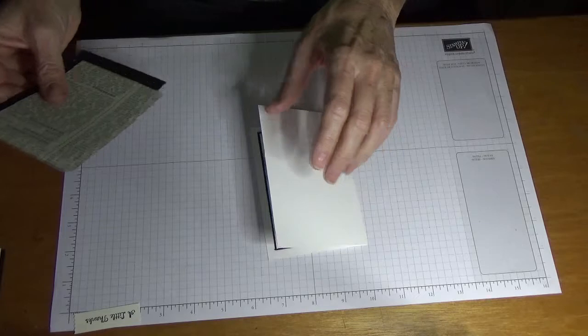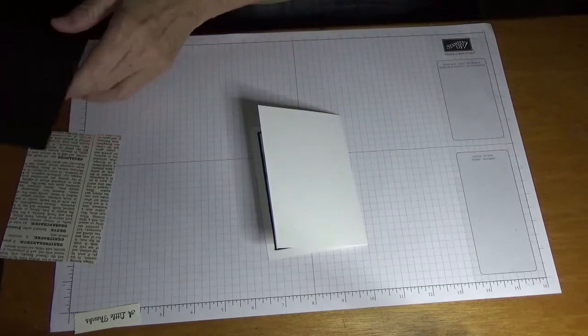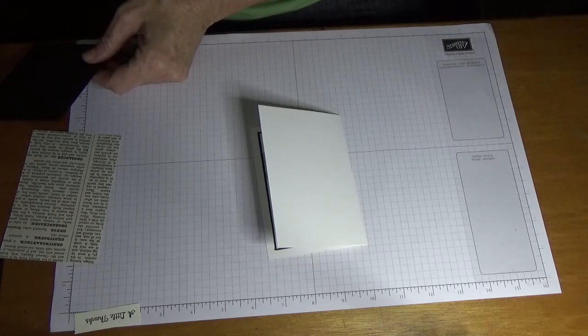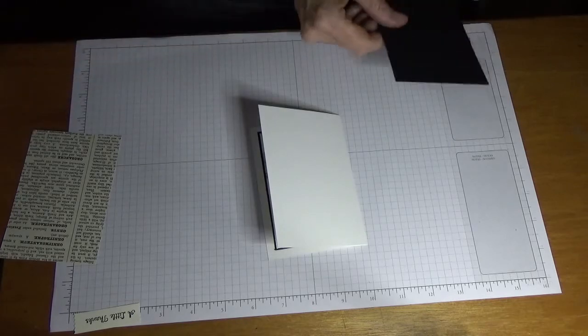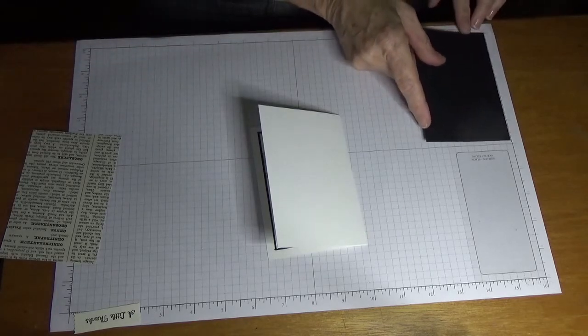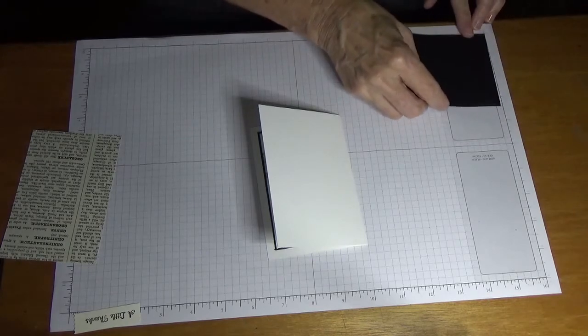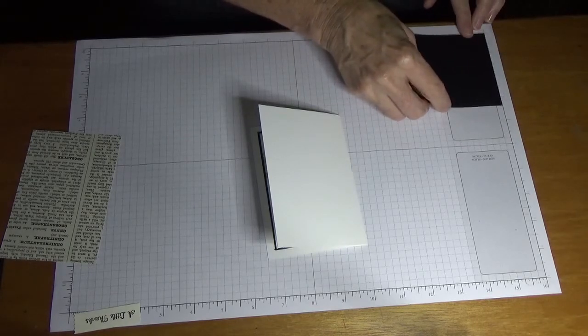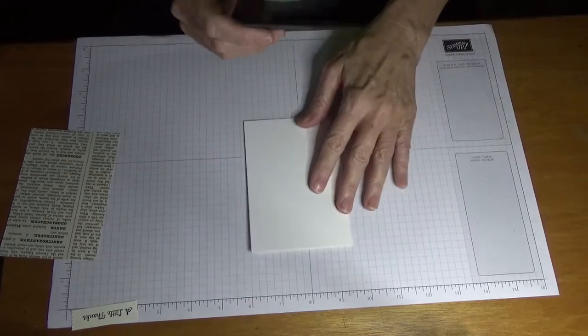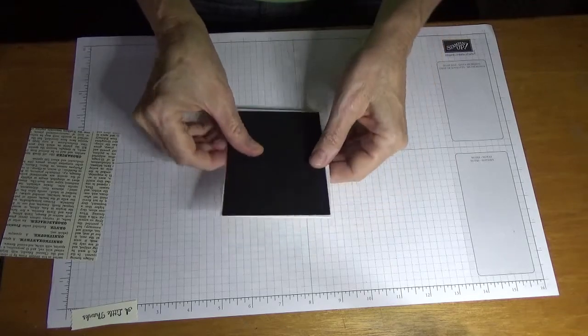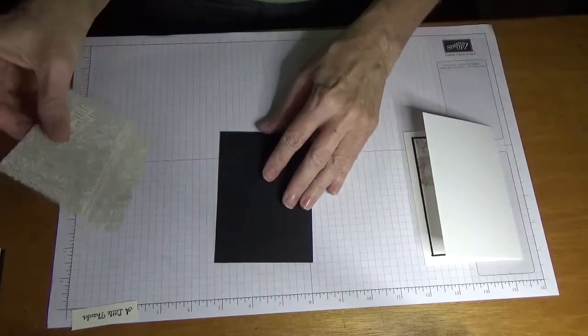So to start with on the outside of the card, we're going to have a piece of black and it's going to measure just a little bit under five inches by two and a half, so it's five and a quarter by two and a half. And that's just going to go on there, but before I do that I'm going to bring in my designer paper.